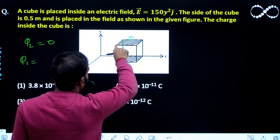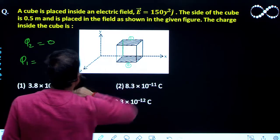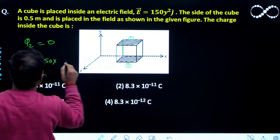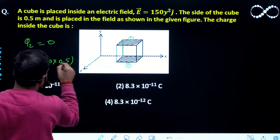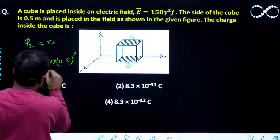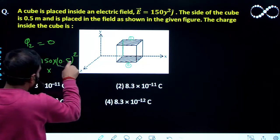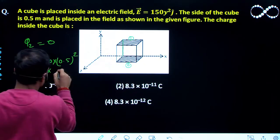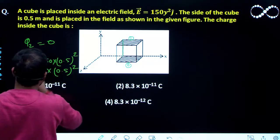So the electric field passing through the surface 1 will be 150 into y squared. Y coordinate is 0.5 so that will be 0.5 squared. So this is the electric field here. Electric field into area will give you the flux here. So area is nothing but 0.5 squared. So this will be the flux 1.